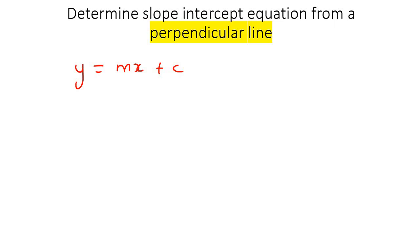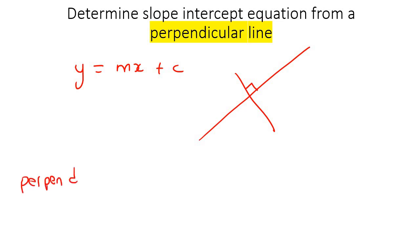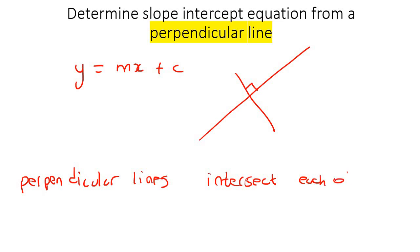Perpendicular lines are lines that intersect each other at 90 degrees. Let's write that down: perpendicular lines intersect each other at 90 degrees.